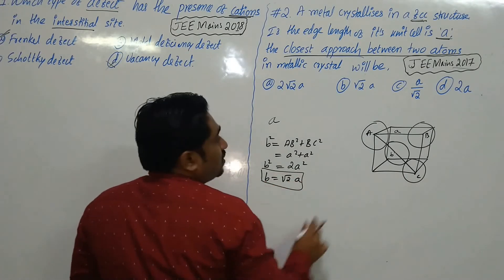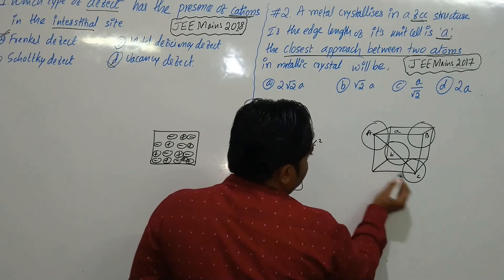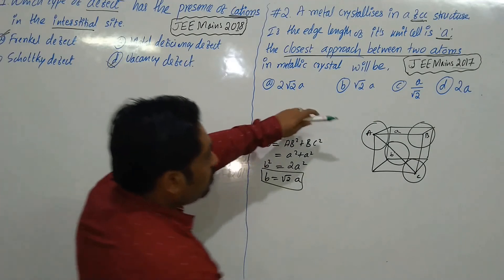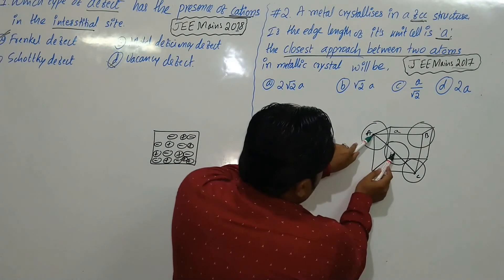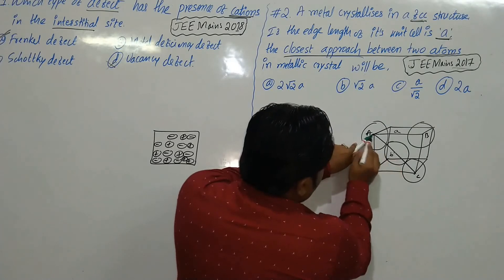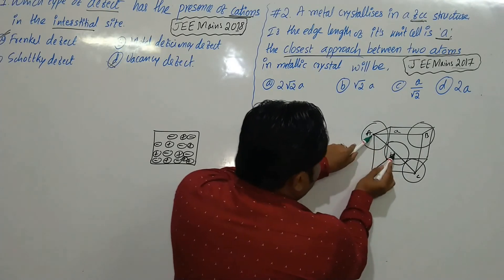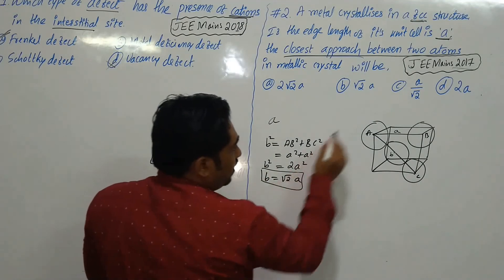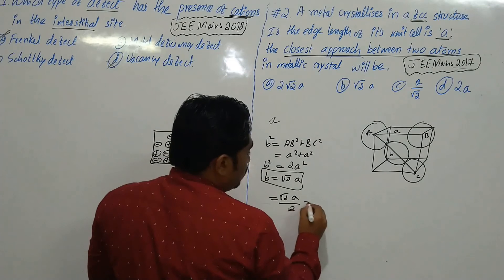The total length from point A to point C along the face diagonal is A√2. Since the particles are touching along the face diagonal, the closest approach between two particles is half of the face diagonal, which equals A√2 / 2.